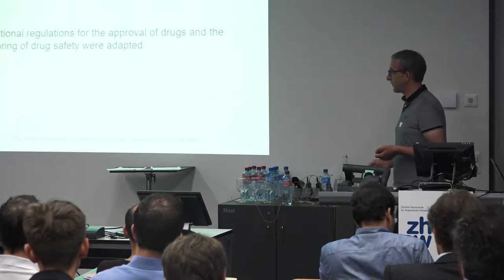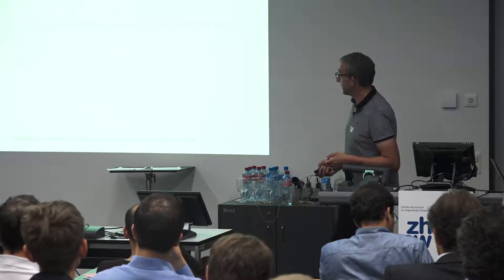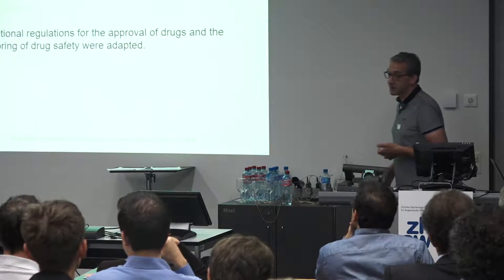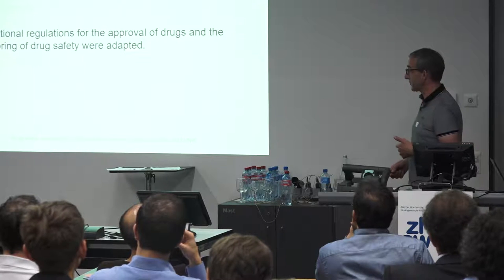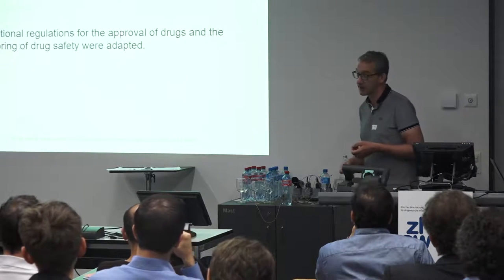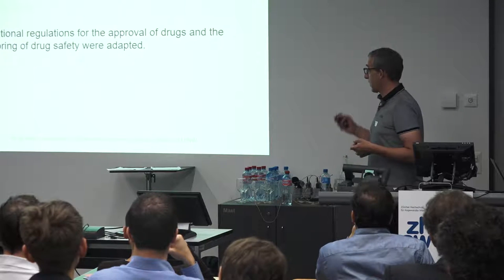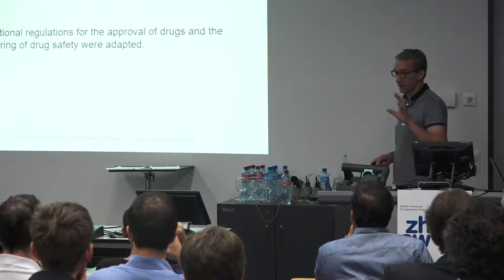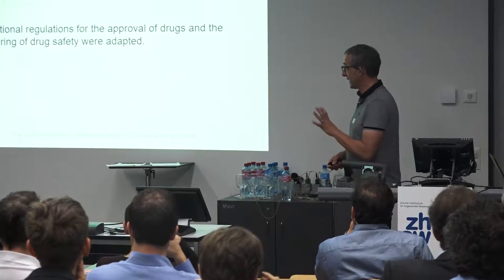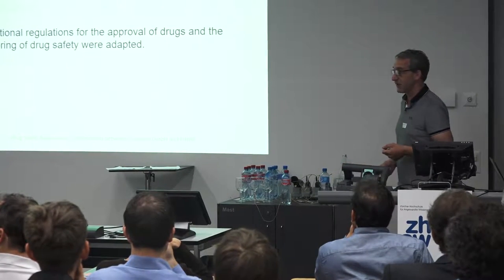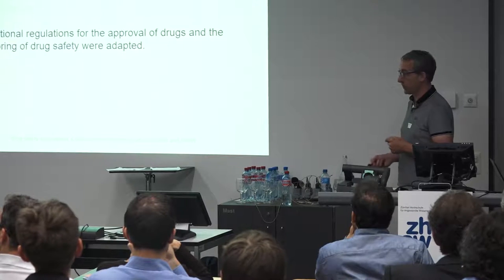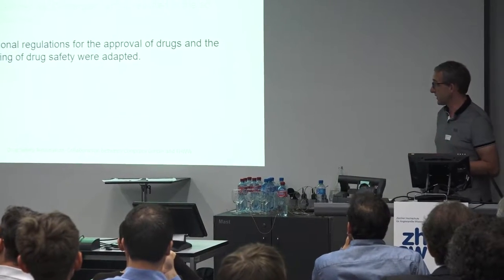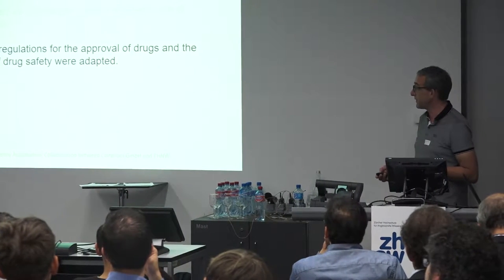It came to the Contergan scandal when it became public that this drug caused malformation in babies. As a result, the drug manufacturers really had to come across better monitoring of drug safety. The regulators and health authorities said this cannot stand the way it was done, so it has to be monitored. That was the point drug safety came into place.